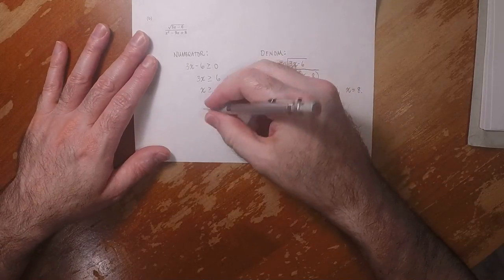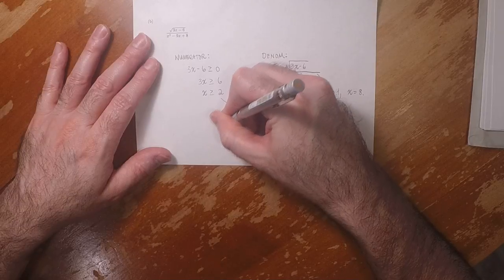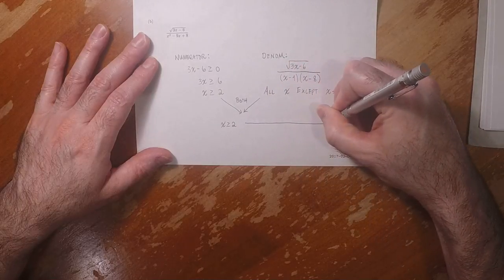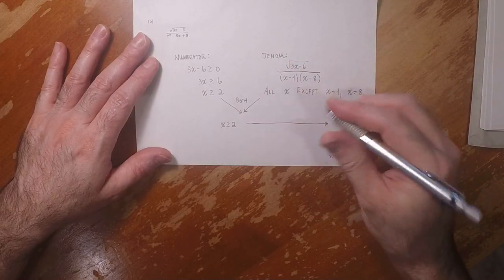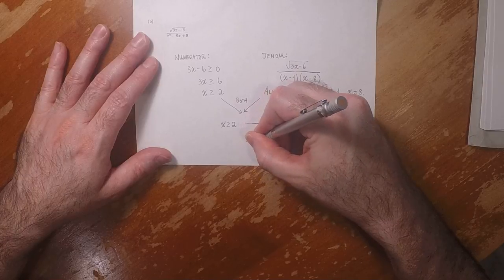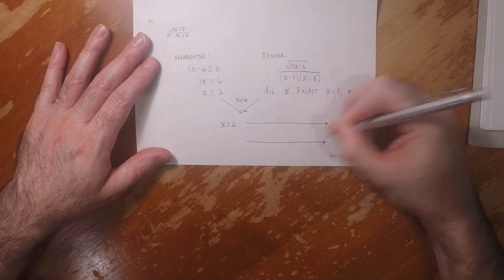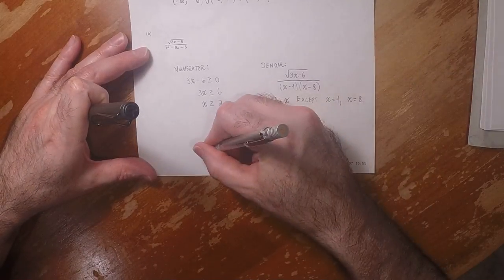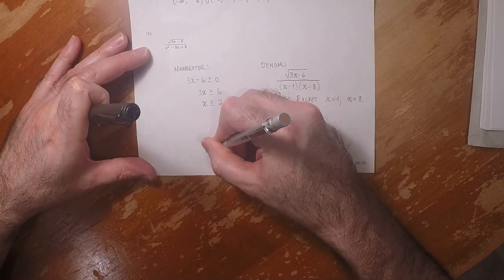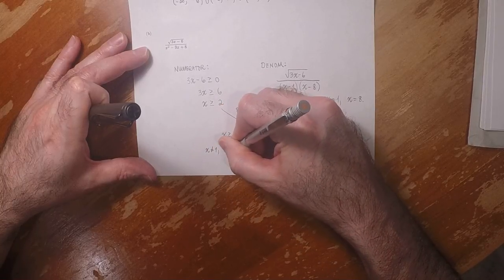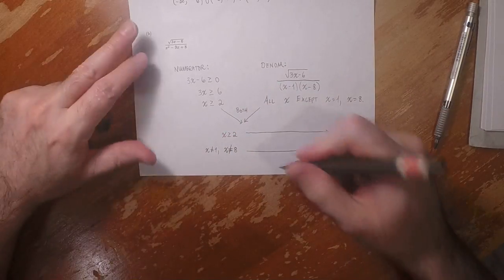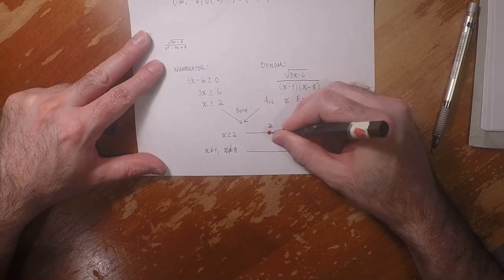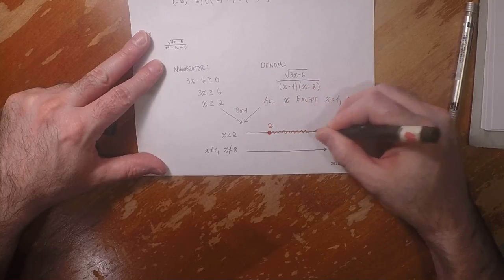So taking these together, x greater or equal to 2 and anything but 1 or 8, looks like the following. So x greater or equal to 2 looks like 2 and onward.